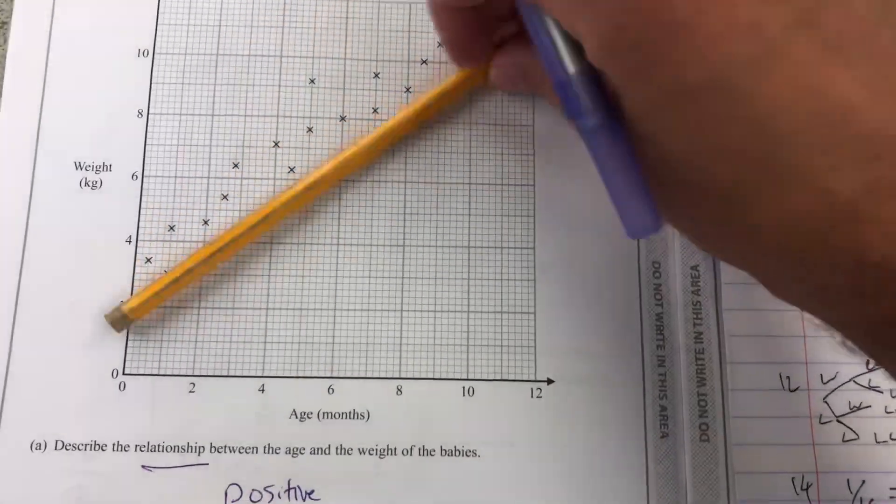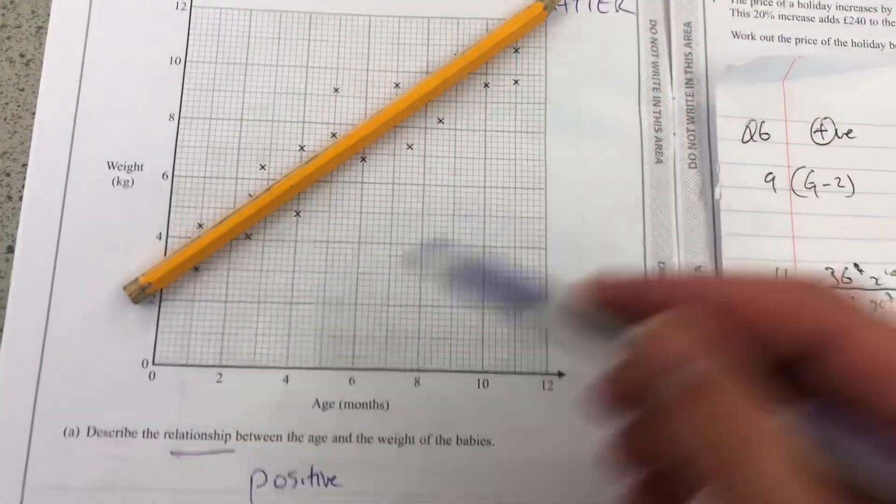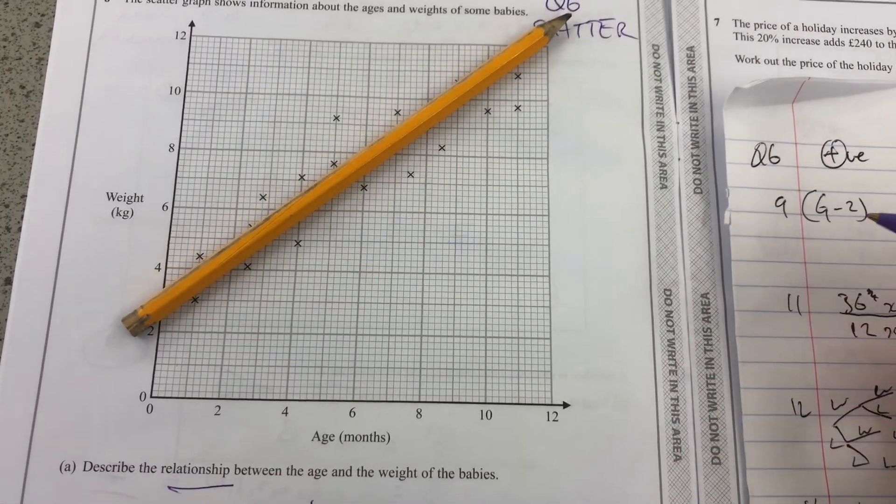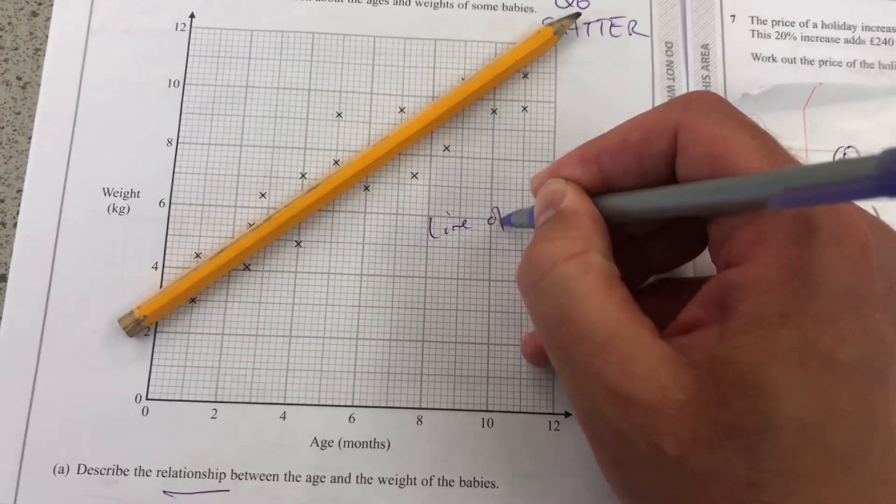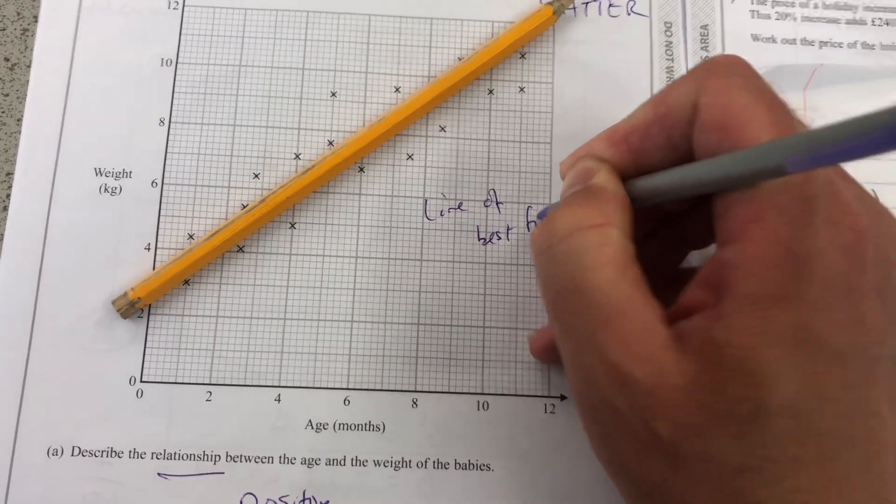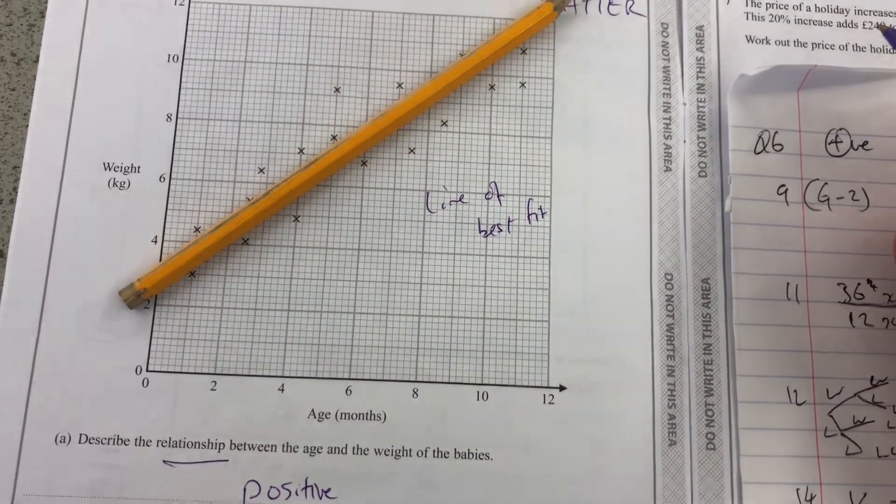But now, it's useful to keep that line there. You should draw a line of best fit with a ruler, a line of best fit to help you use that graph for extrapolation.